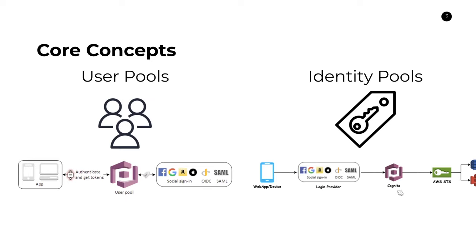Now let's talk about application integration with user pools — how do we actually use user pools to guard access to our AWS resources? There are two different approaches. In the first, the application provides authentication for the user via the hosted UI or other means, the user authenticates with Amazon Cognito, and they're redirected back with tokens. The application then provides those tokens to your backend REST API, where they need to be verified with Cognito to validate they're correct and not forged. This requires a bit more manual work but is a common pattern.